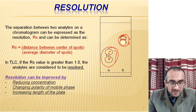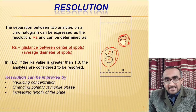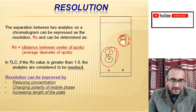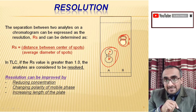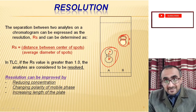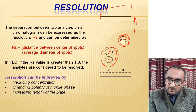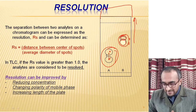Resolution can also be improved by changing the polarity of the mobile phase, which alters the differential interactions of analytes with both the mobile phase and stationary phase. Another way is to increase the length of the TLC plate — if the plate is longer, the distance traveled by the spots will be greater, improving resolution because the analytes have to travel longer on the TLC plate.